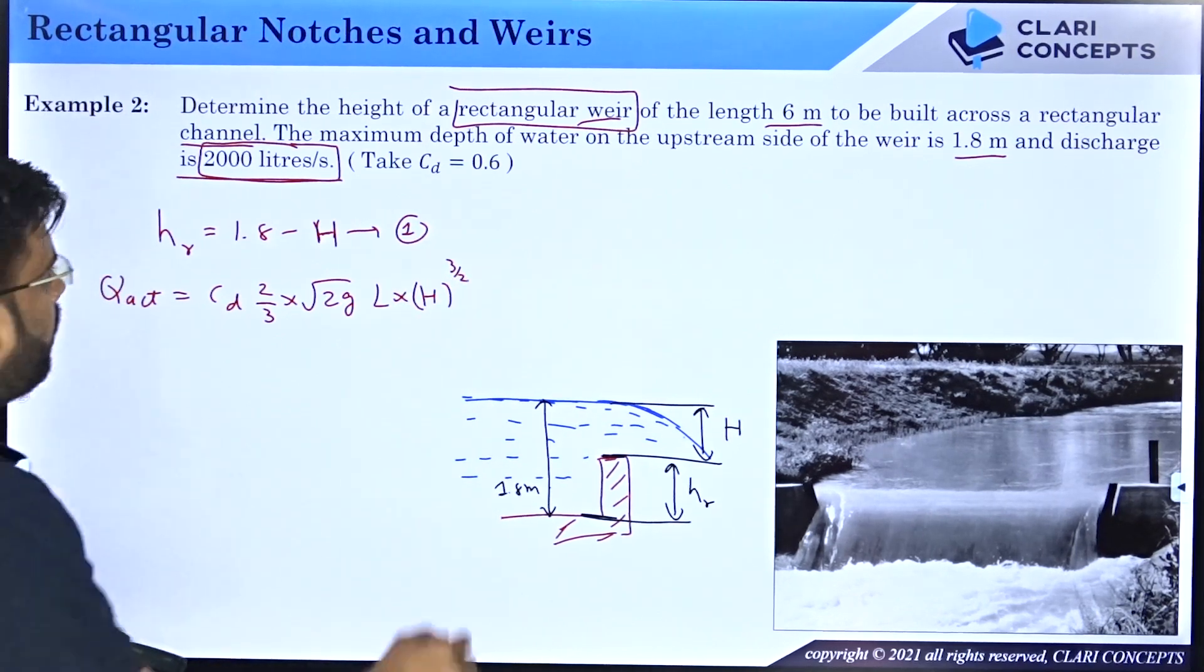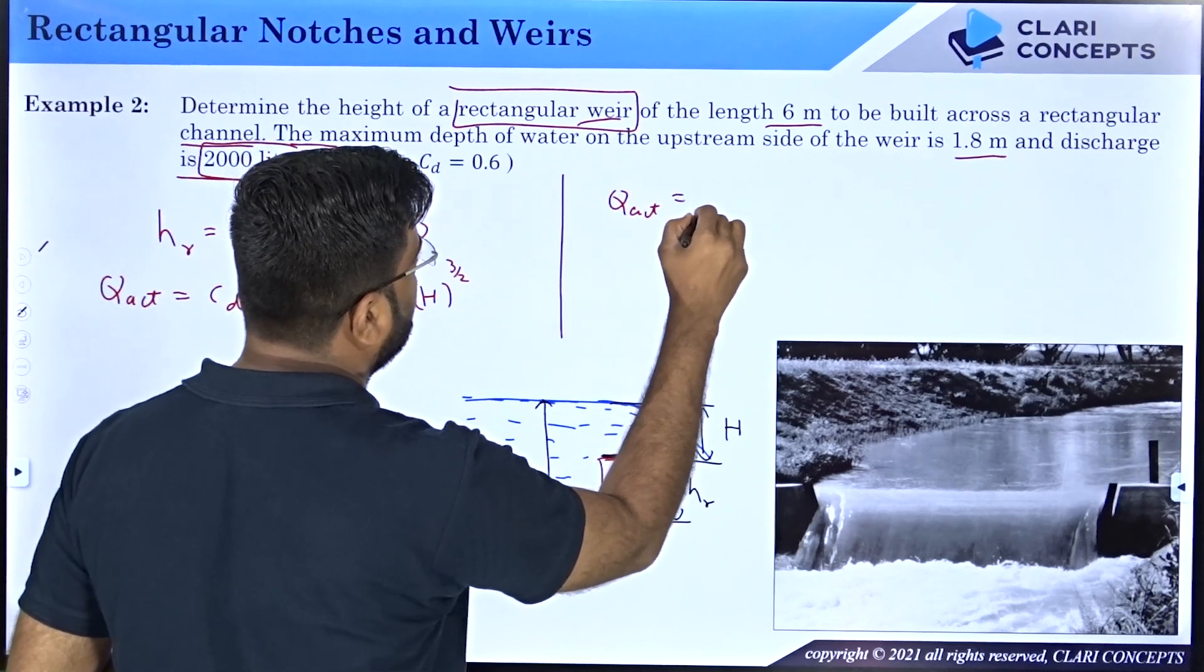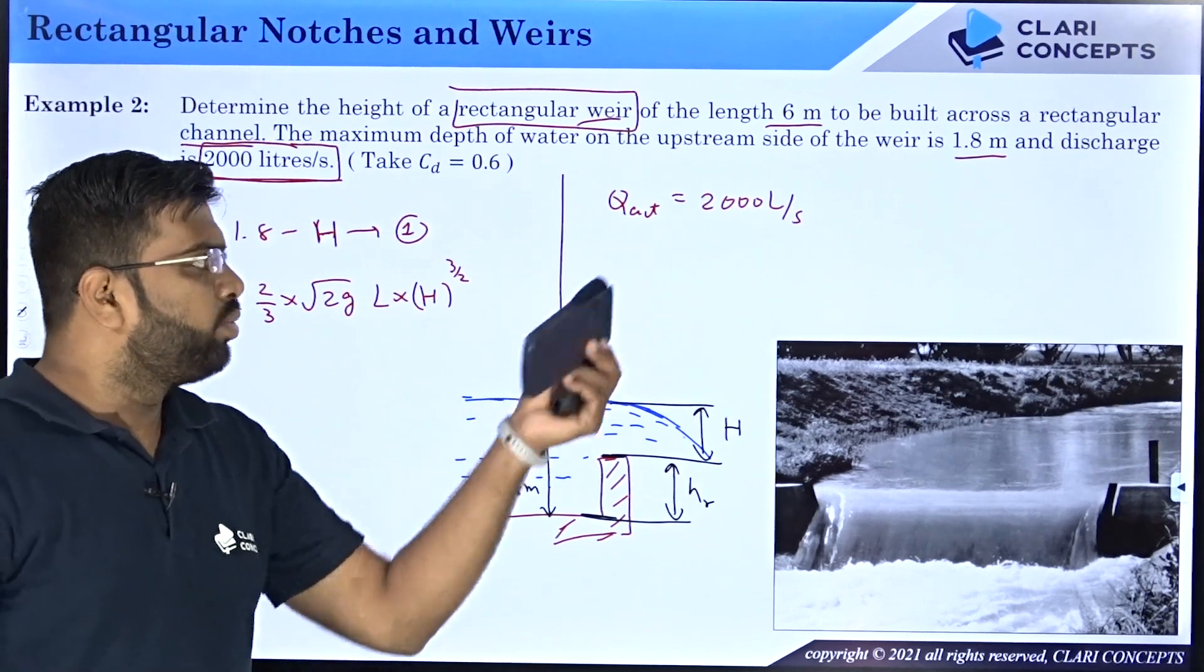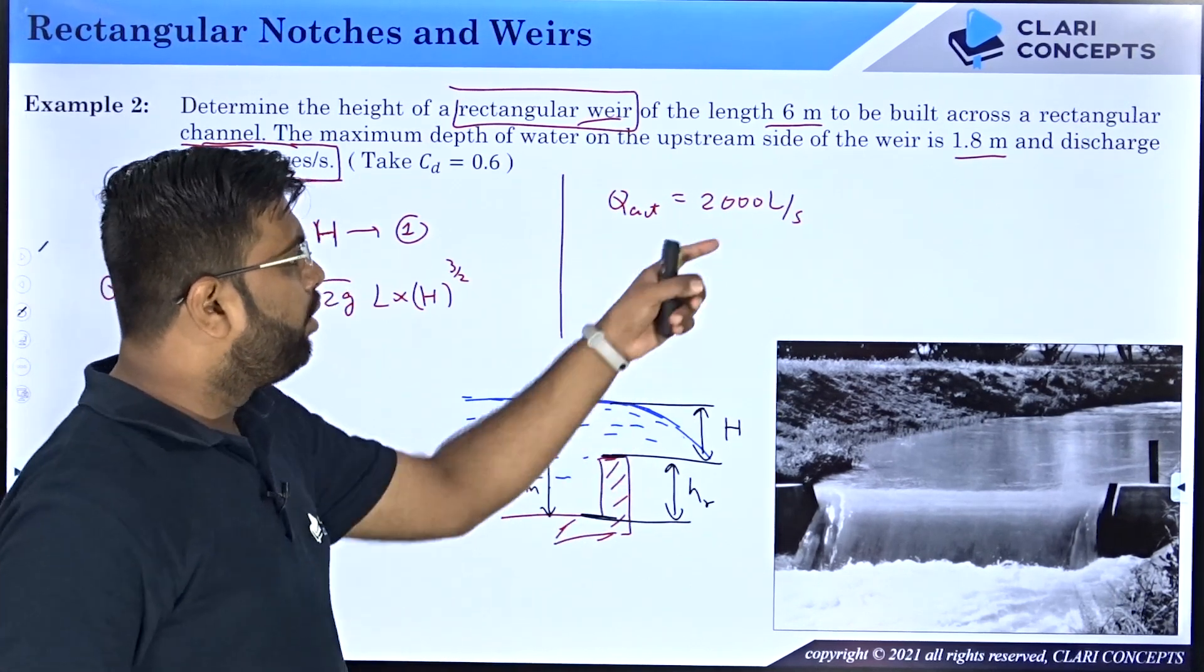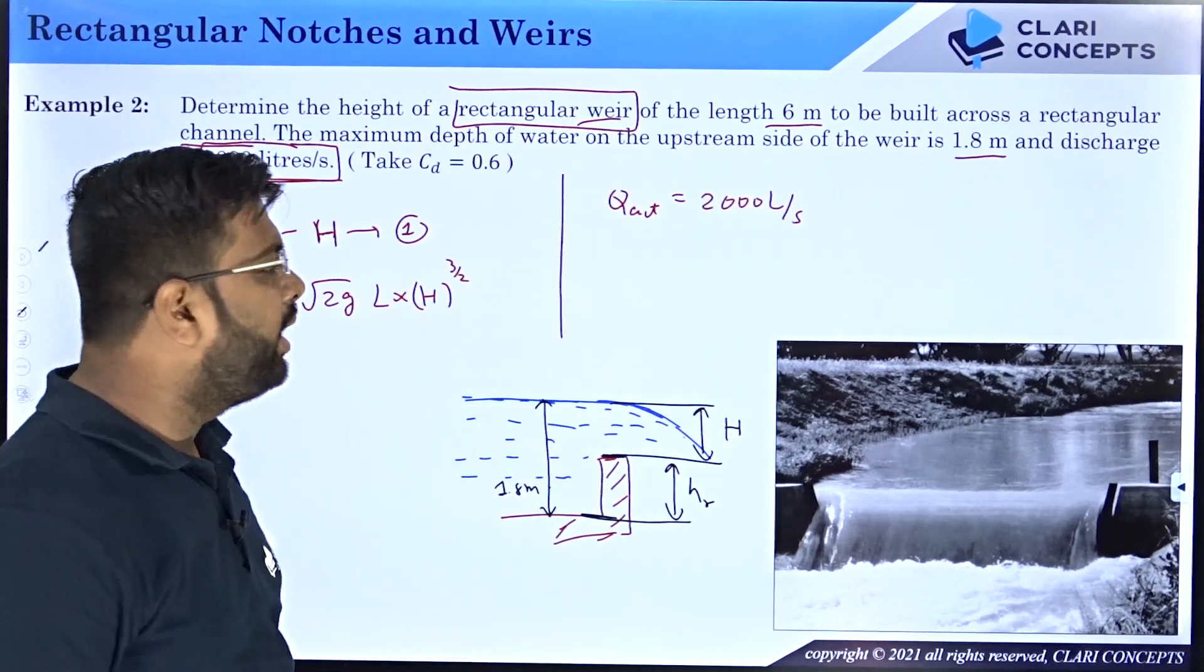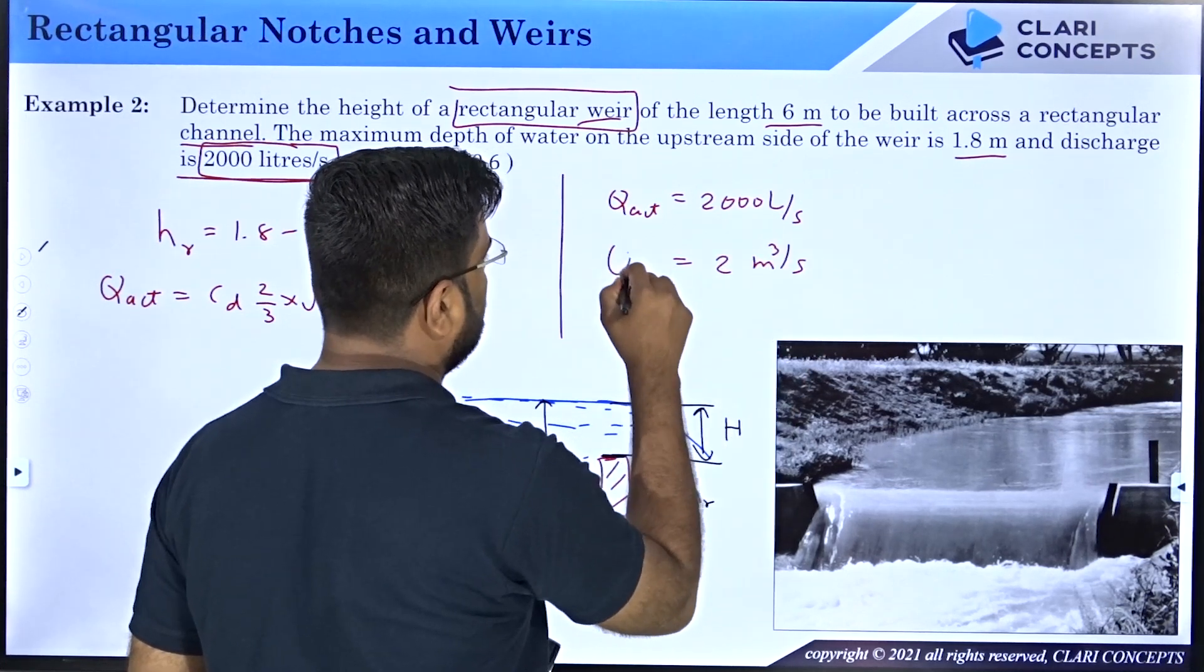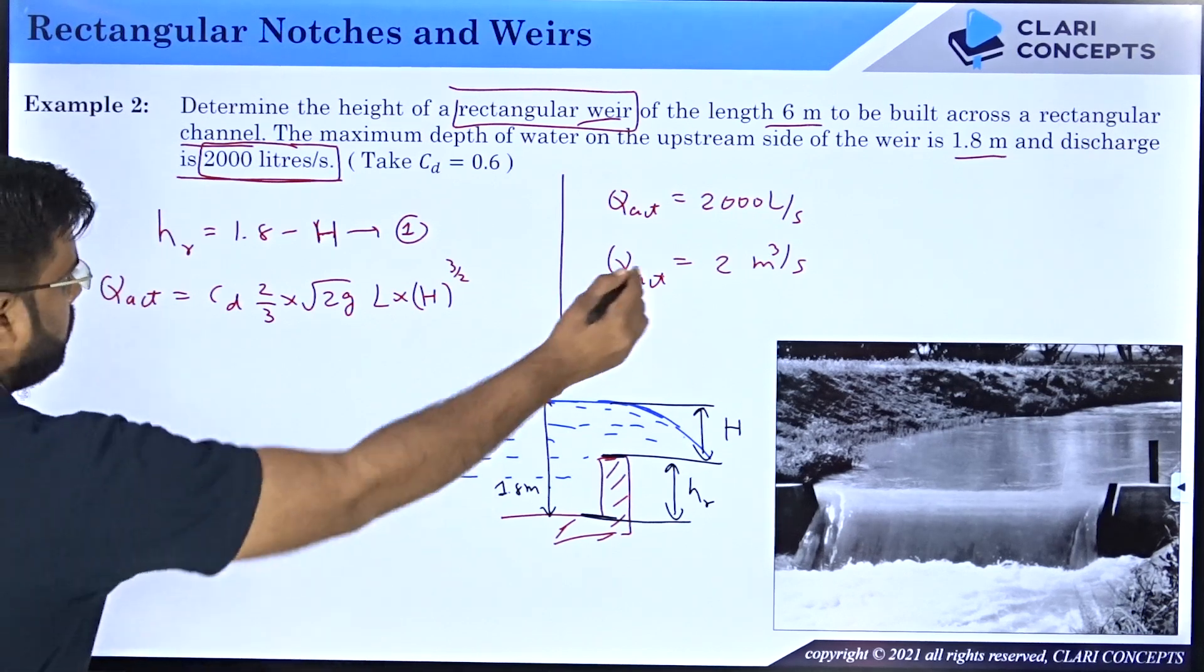Now firstly what are the data given to me? I have been given q actual is 2000 liters per second. I hope you are aware that I need to convert this value into meter cube per second for the SI unit. And whenever you want to convert liter into meter cube you have to divide the liters by 1000. So when you divide it by 1000 you will get 2 meter cube per second. So this is the flow rate. Now let us substitute the values.